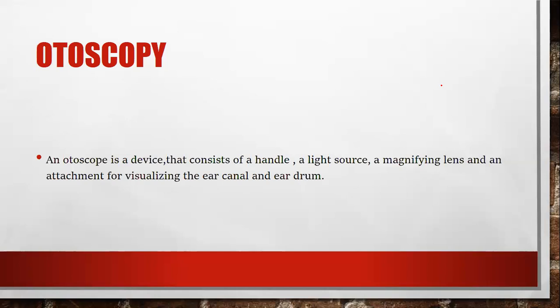Next is inspection of the ear canal. We can assess the ear canal using an instrument called an otoscope. The method is called otoscopy. An otoscope is a device that consists of a handle, a light source, a magnifying lens, and an attachment for visualizing the ear canal, external ear, and eardrum.